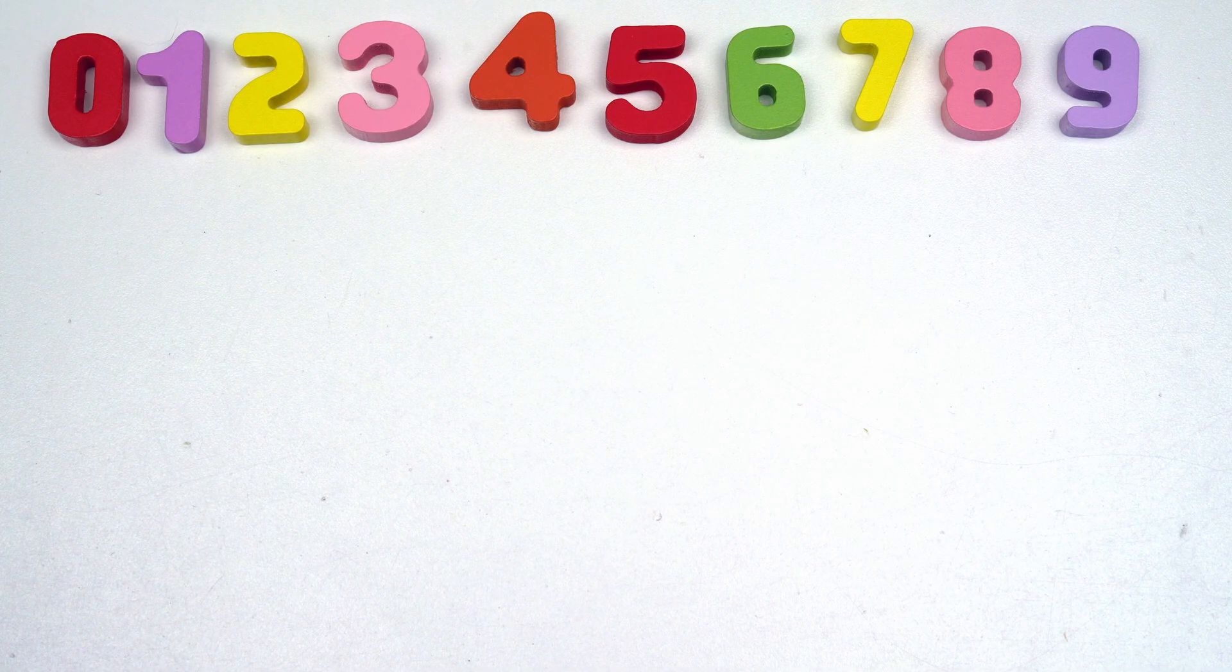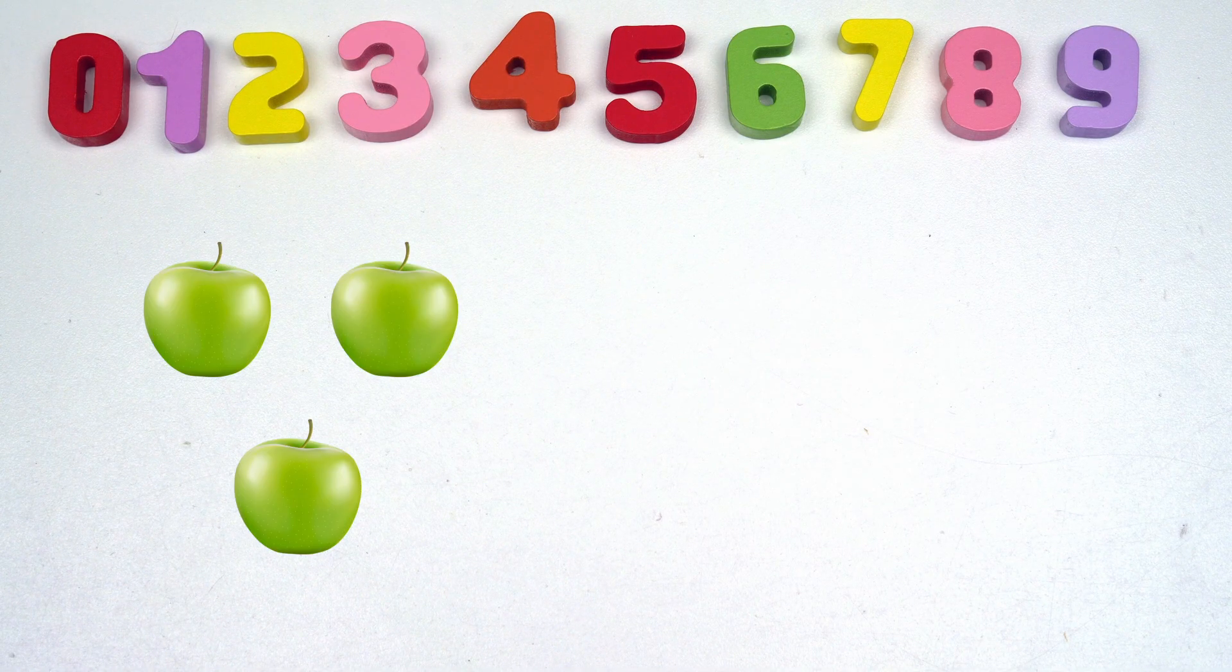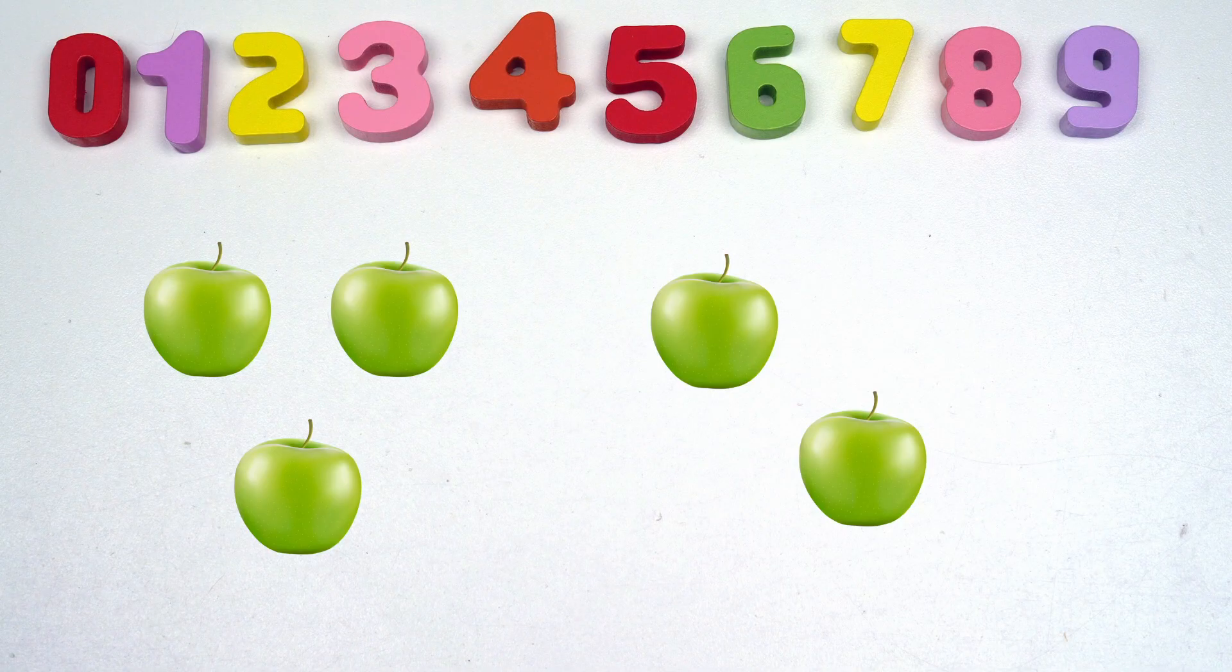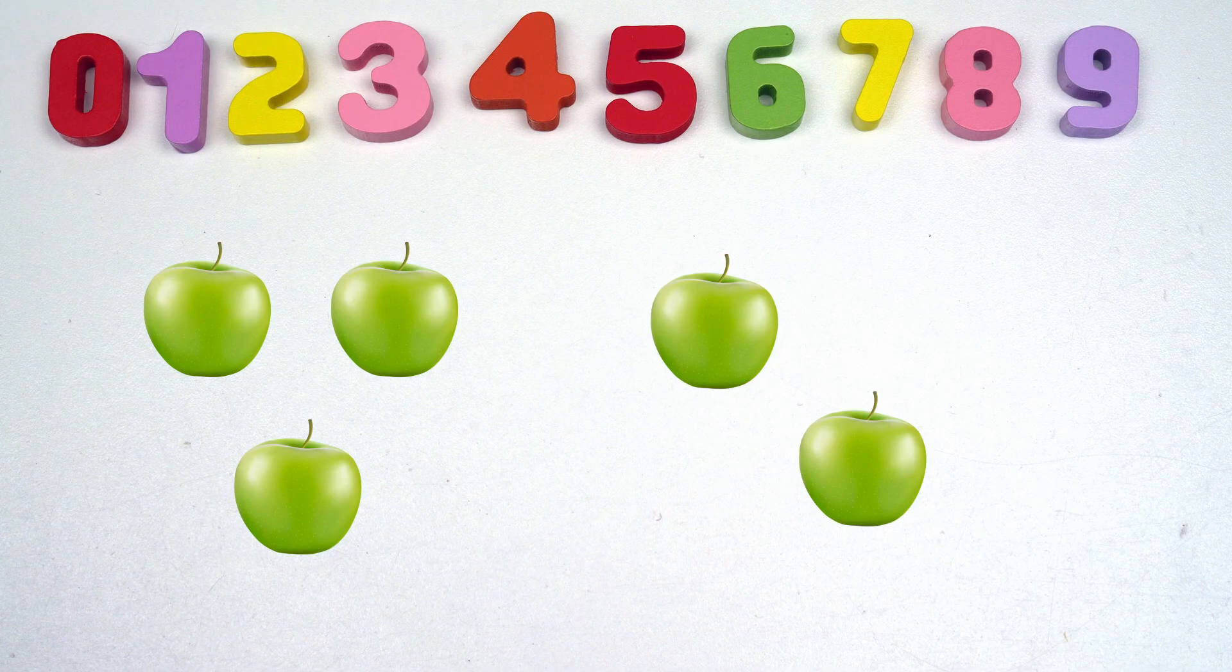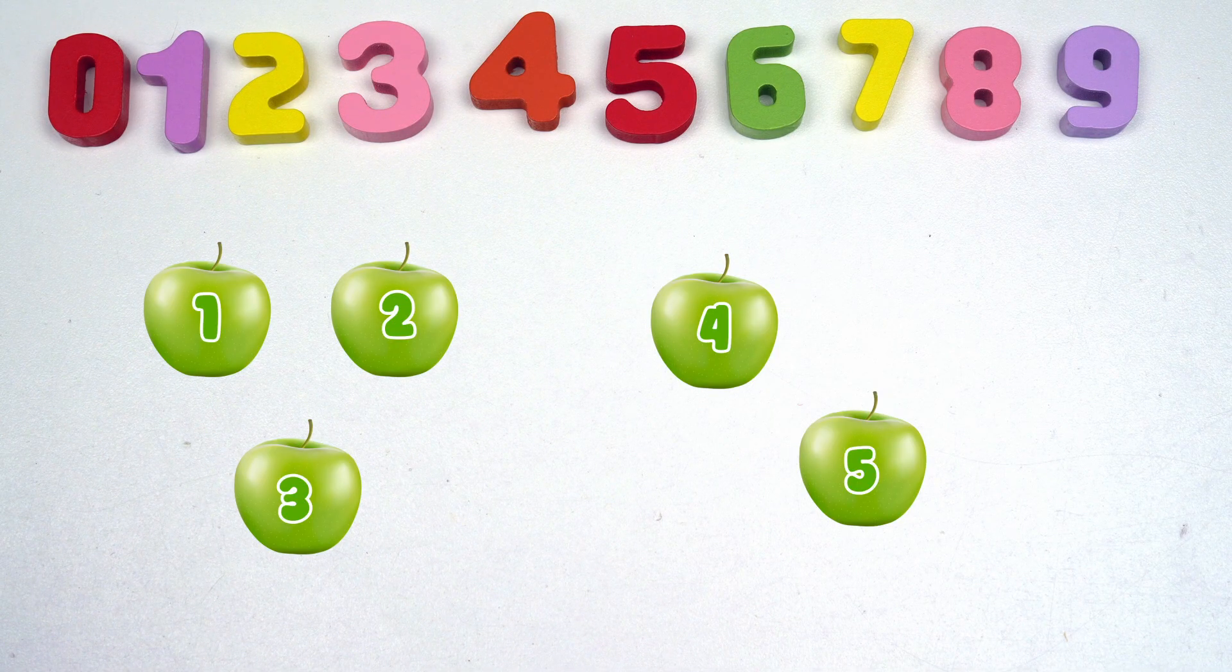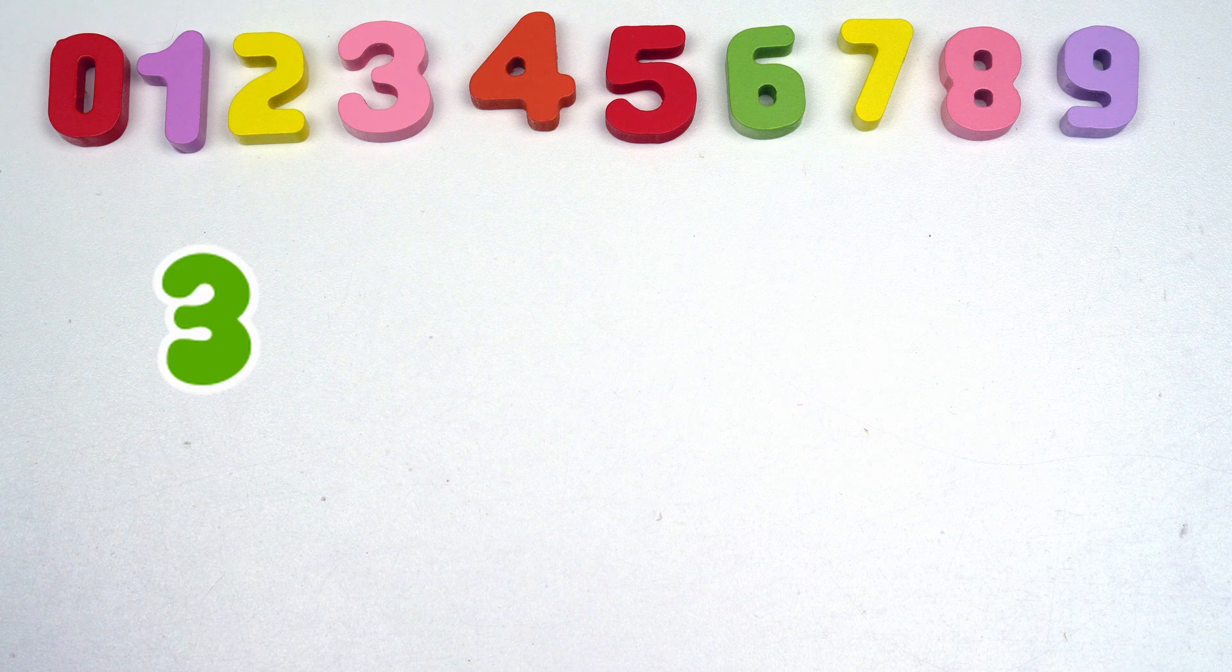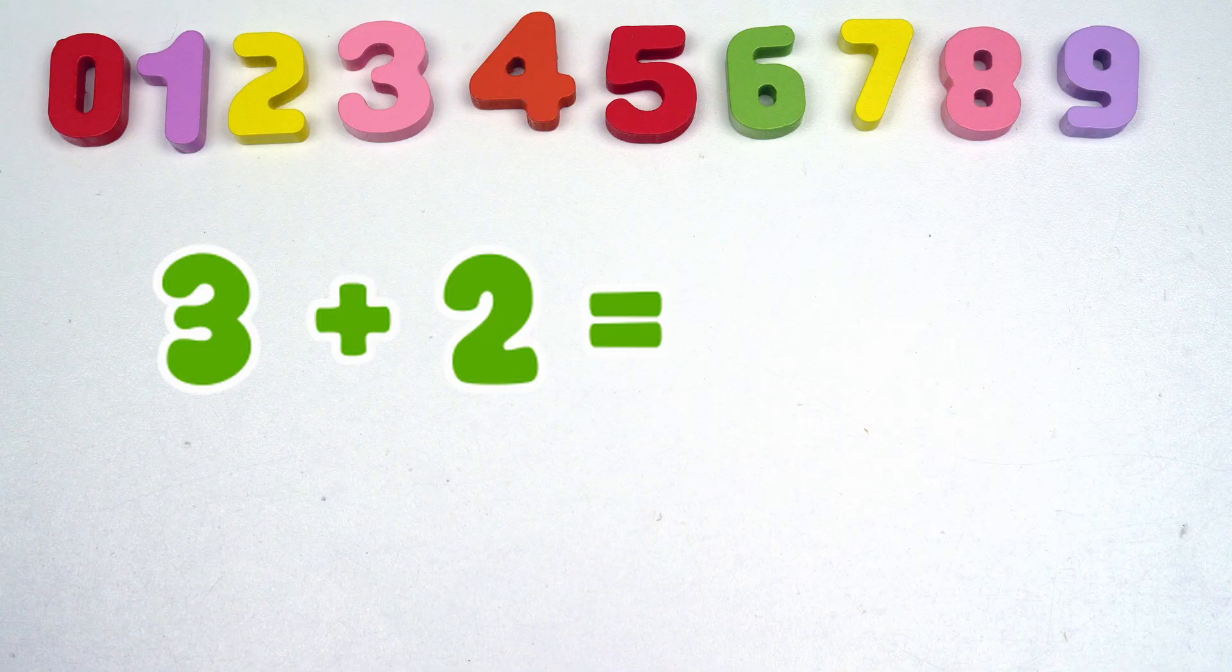Let's look at an example. If we have three apples and our friend gives us two more, how many apples do you have all together? That's right! Five! So we can say the number bond for five is three and two because three plus two equals five.